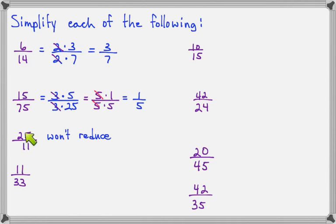So 25 over 11 is improper, but it cannot be reduced. It's okay to leave it improper. But even if I write 25 as 5 times 5, I can't do that to the bottom, to the 11. So there's no sense in breaking down the 25 if it won't help me cancel anything. So we'll just say that this one won't reduce.